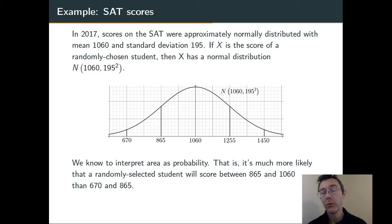When we look at density curves for random variables, we know that we're interpreting areas beneath as probabilities. So, from this picture, we're seeing that the probability of randomly selecting someone between 865 and 1060 is going to be substantially higher than randomly selecting someone whose score is between 670 and 865.